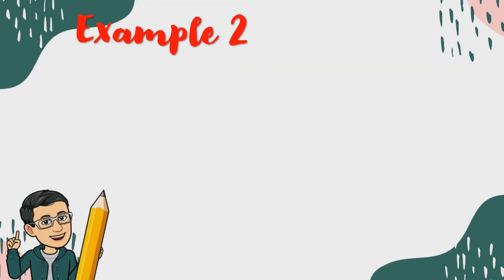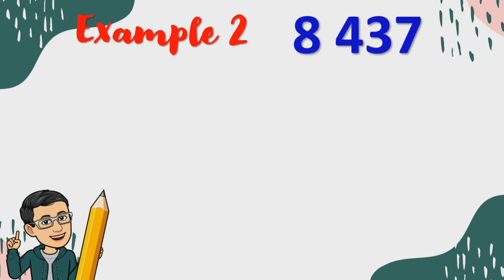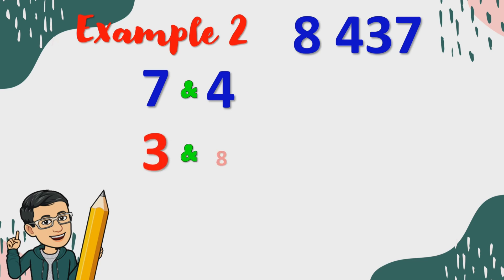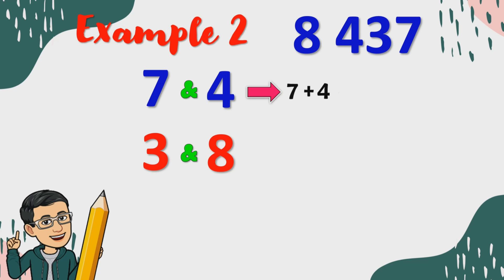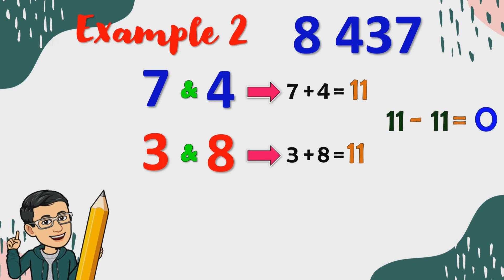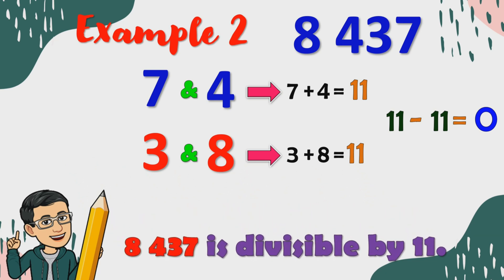How about this second example? 8,437 — is it divisible by 11? Again, we are going to identify the digits in the odd places: we have 7 and 4. While on the even places, we have 3 and 8. Let's get their sum: 7 plus 4 is equal to 11. 3 plus 8 is equal to 11. 11 minus 11 is equal to 0. Therefore, 8,437 is divisible by 11.